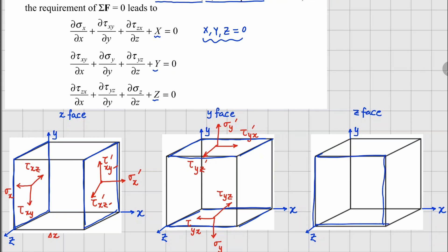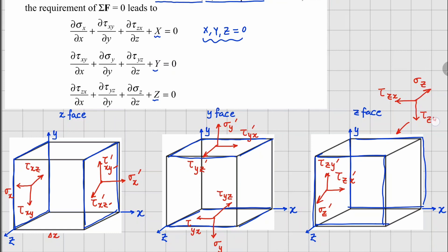For the z-faces, the positive z-face has all stress components in the positive direction and the negative z-face in the negative direction. The normal stress is sigma_z prime and sigma_z. The shear stress in the x-direction is tau_zx prime and tau_zx, and in the y-direction tau_zy prime and tau_zy. In addition to these stresses, we also have volumetric body forces: capital X, capital Y, and capital Z.